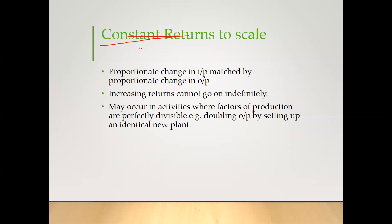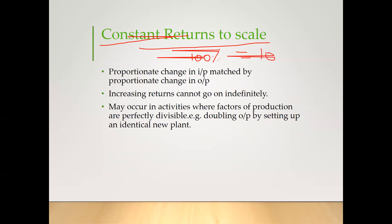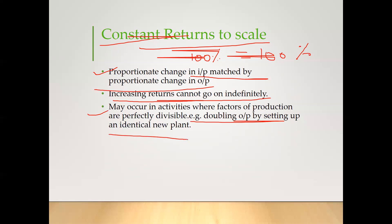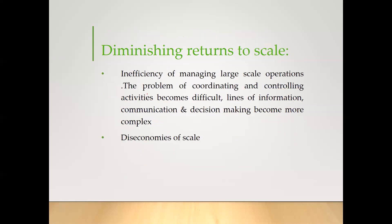Next is constant return to scale. If we give 100% input, we get 100% output — a proportionate change in input is matched by a proportionate change in output. Increasing return cannot go on indefinitely. Constant return to scale may occur in activities where factors of production are perfectly divisible. An example is doubling output by setting up an identical new plant.